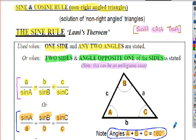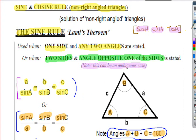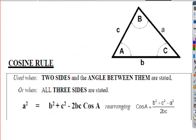We use the sine rule when given any two angles and one side, or two sides and the angle opposite one of them. There are conditions on when you can use it — don't worry too much, just apply it and see if you have enough information. What we'll find in today's questions is that we won't always have enough information for the sine rule, so we'll need another rule: the cosine rule.